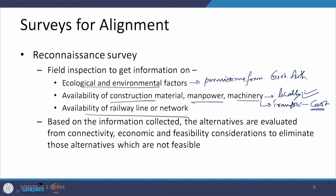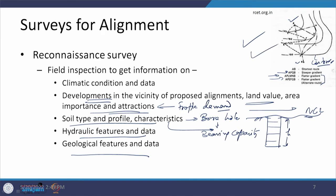We should also find out if the construction material, though available, can be modified locally to meet specifications. Availability of any other network or railway line developed over time is also to be considered. Once we have all this information on the 3, 4, or 5 alternatives drawn during desk study and examined during reconnaissance survey, we look at what can be dropped. For example, the shortest route passing through many contours may not be feasible, so we may go with flatter gradients and reduce from 4 alternatives to 2.